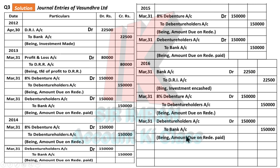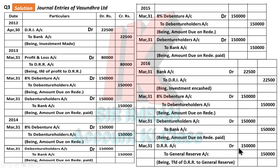Debenture to Debenture Holder (due), Debenture Holder to Bank (paid) — four installments completed: 2013, 2014, 2015, 2016. All payments are done. At the end of redemption, the last entry is to transfer the total DRR to General Reserve: DRR to General Reserve Rs. 1,50,000 — which is Rs. 80,000 added this year plus Rs. 70,000 opening balance = Rs. 1,50,000.